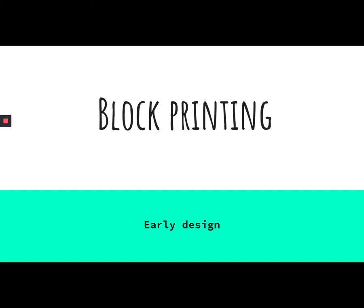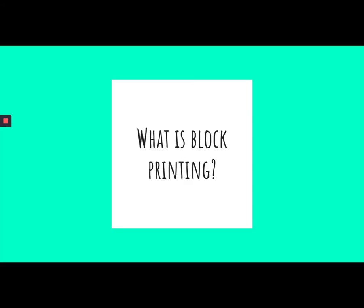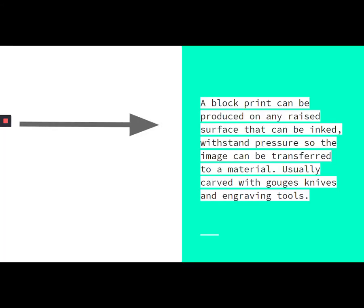Block printing is any surface that is flat — typically — that is carved or gouged, so it has a raised surface and a recessed surface. That raised surface can be inked and then transferred to a material, typically paper, and it makes a print.